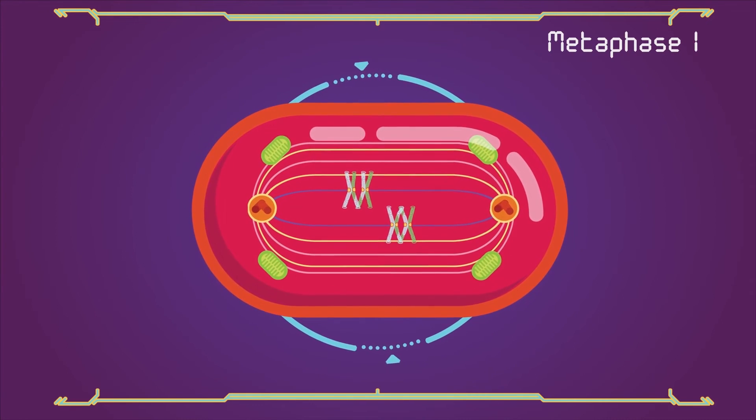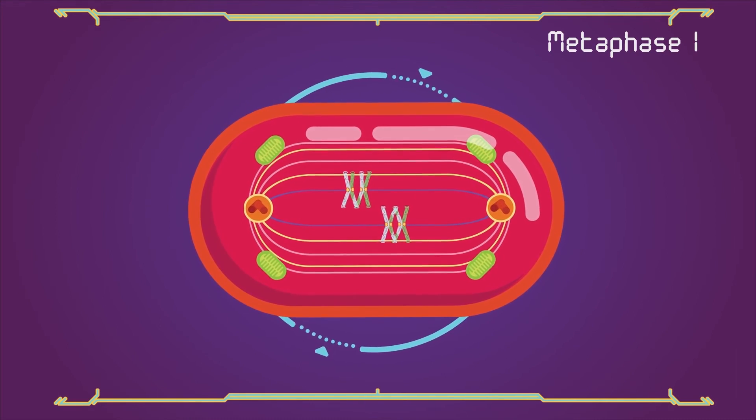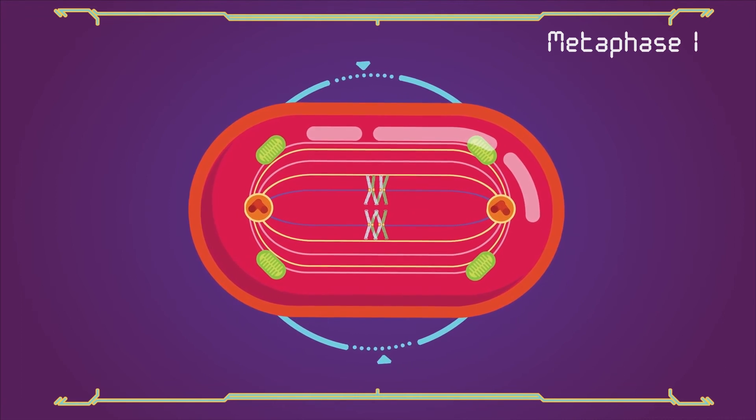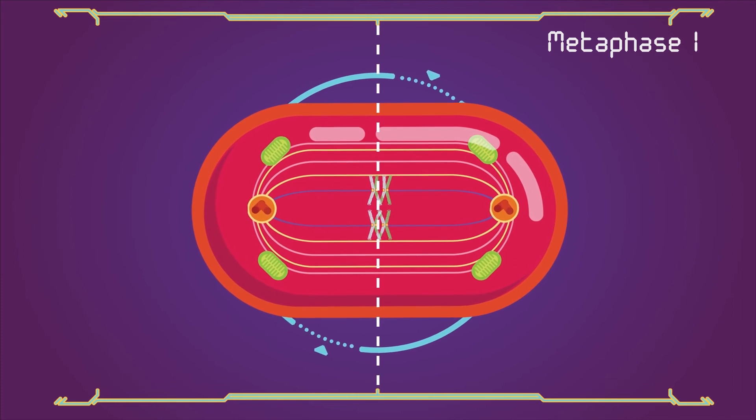Metaphase 1: homologous pairs move together along the metaphase plate. The paired homologous chromosomes align along an equatorial plane that bisects the spindle.